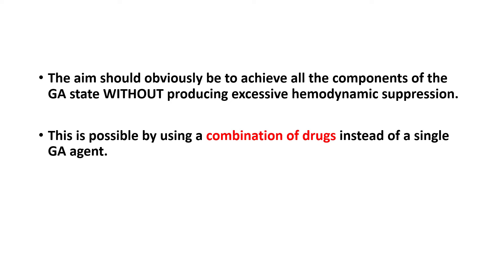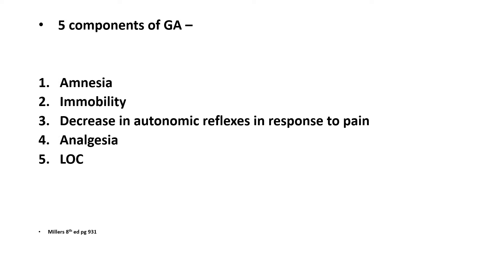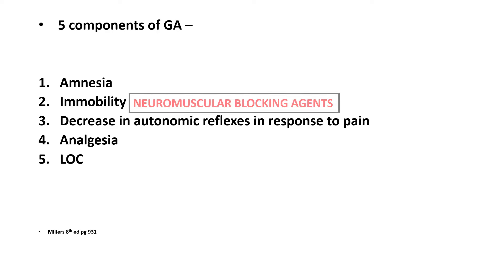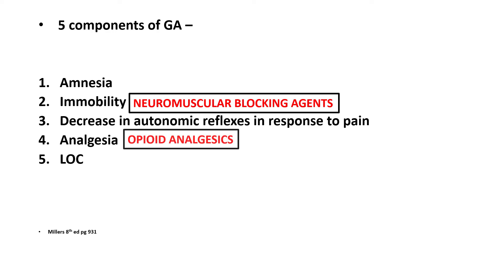This is possible by using a combination of drugs instead of a single general anesthetic agent. For example, to achieve all five components, we would combine the general anesthetic agent with neuromuscular blocking agents to produce good immobility, with opioid analgesics to produce analgesia, and with other drugs.